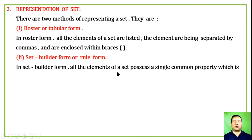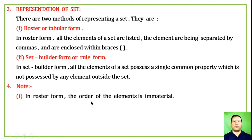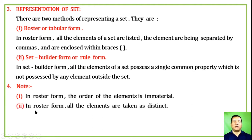In set builder form, all elements of a set possess a single common property which is not possessed by any element outside the set. Note: in roster form, the order of elements is immaterial, and all elements are taken as distinct.